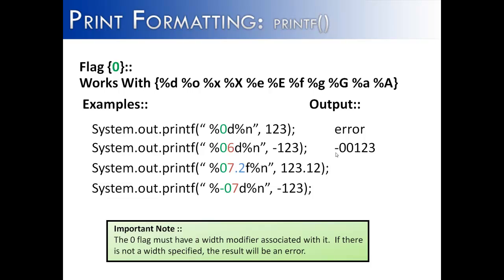The negative sign is going to come before the leading zeros. Next, I've added a float value. It only has one leading zero because there are 1, 2, 3, 4, 5, 6 characters in 123.12. The decimal separator is a character, and the last space will have a leading zero in front of it.